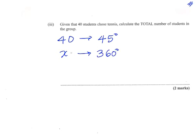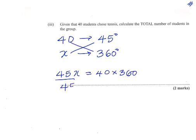So at this point I'm going to cross multiply. 45 times x is equal to 40 times 360. Then I'm going to divide both sides by 45. And 45 into 360 goes 8.